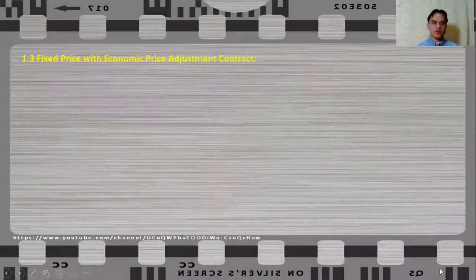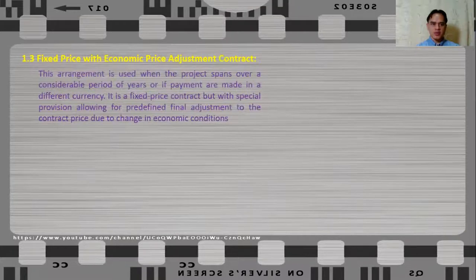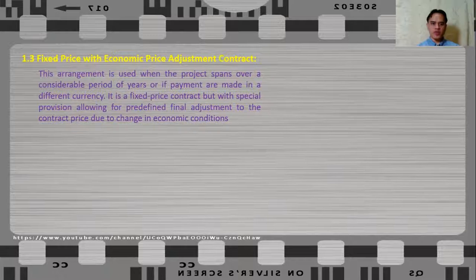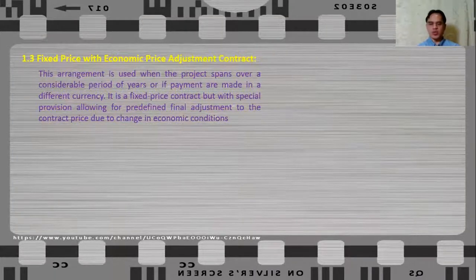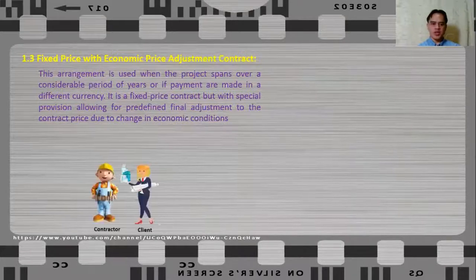Let us now talk about fixed price with economic price adjustment contract. This arrangement is used when the project spans over a considerable period of years, or if payments are made in a different currency. It is a fixed price contract but with a special provision allowing for a predefined final adjustment to the contract price due to changes in economic conditions.